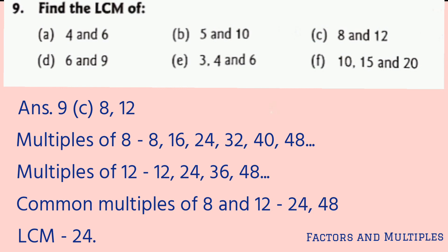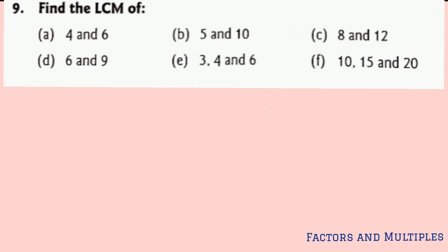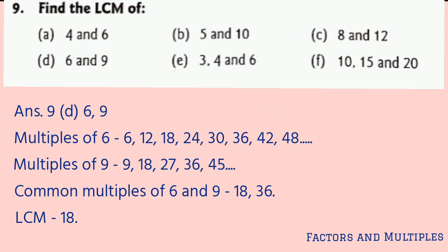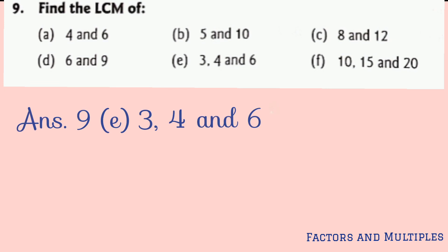Out of which 24 is the least common multiple of 8 and 12. Part d: 6 and 9. After writing the multiples of 6 and 9, we get 18 and 36 as the first 2 common multiples, out of which 18 is the LCM of 6 and 9.